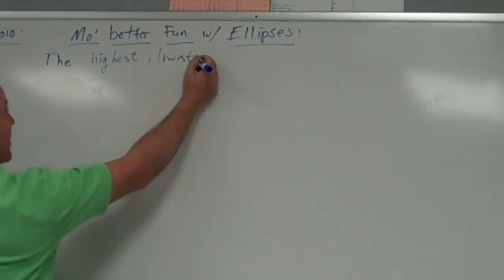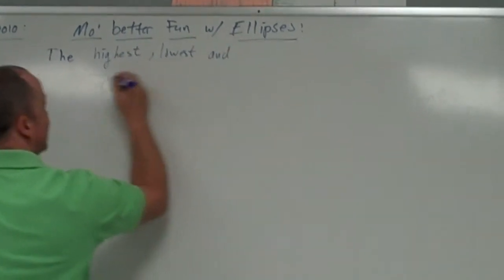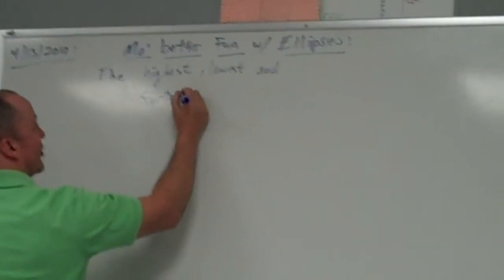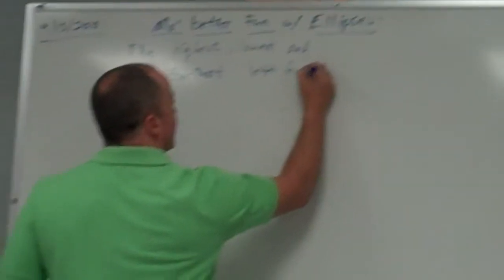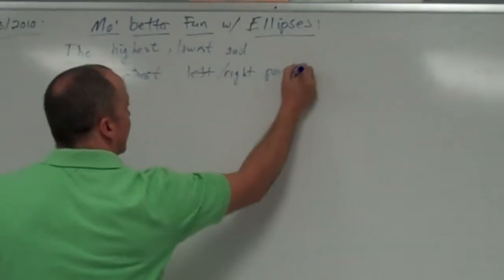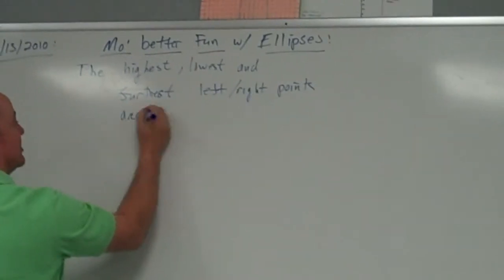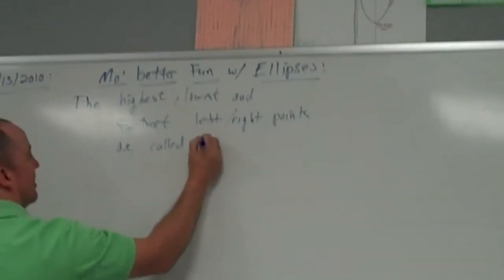The highest, lowest, and furthest left, right points are called vertices.